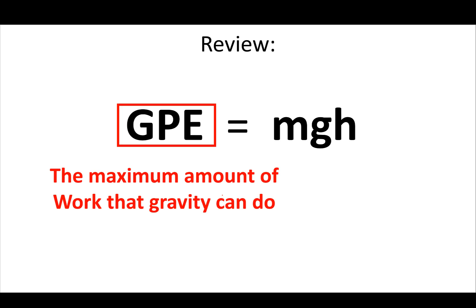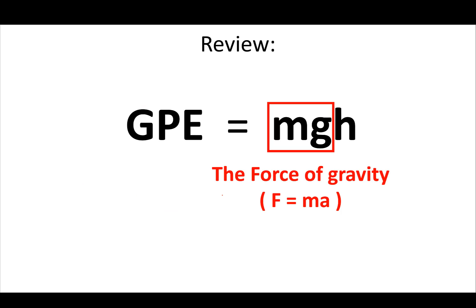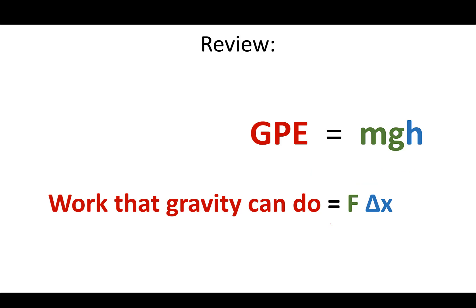GPE stands for gravitational potential energy — it's the maximum amount of work that gravity can do. MG is the force of gravity, the mass of the object multiplied by the acceleration of gravity near Earth's surface, normally 10 or 9.8. H is the height of the object. So the work gravity can do equals the force gravity applies multiplied by the distance over which gravity acts. That's where the gravitational potential energy formula comes from.